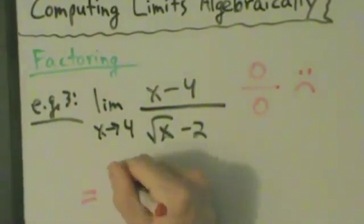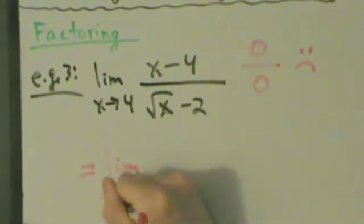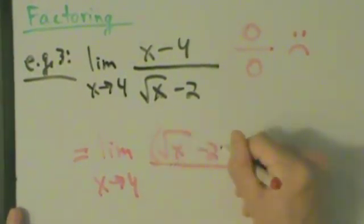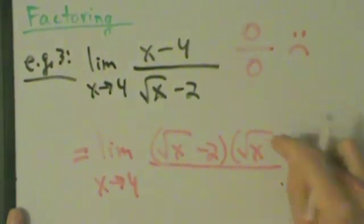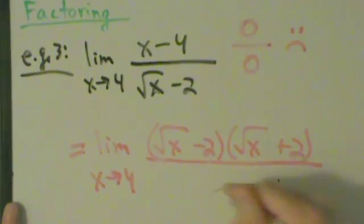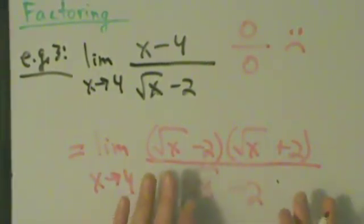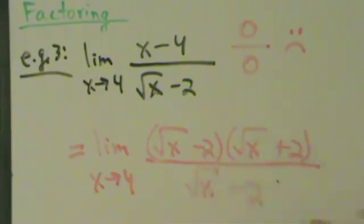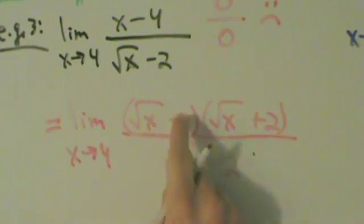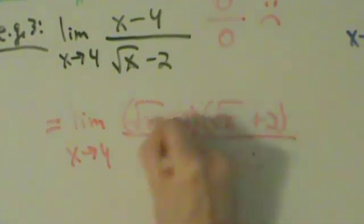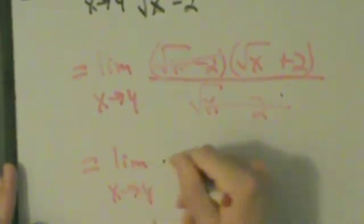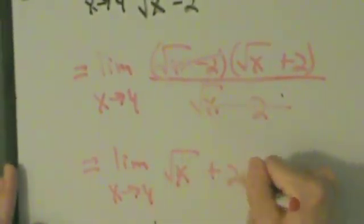So this equals the limit as x approaches 4, where the top factors into root x minus 2 times root x plus 2, all divided by square root of x minus 2. Make sure the minus 2 and plus 2 are outside the radical signs — the radical is only over the x. The common factor of root x minus 2 cancels, and we're left with the limit as x approaches 4 of the square root of x plus 2.